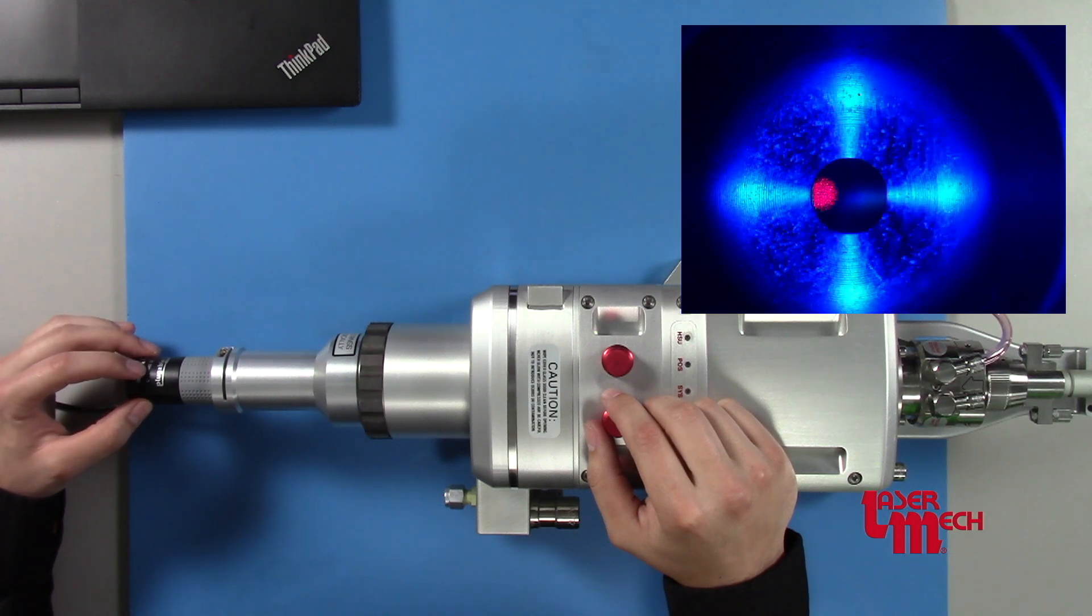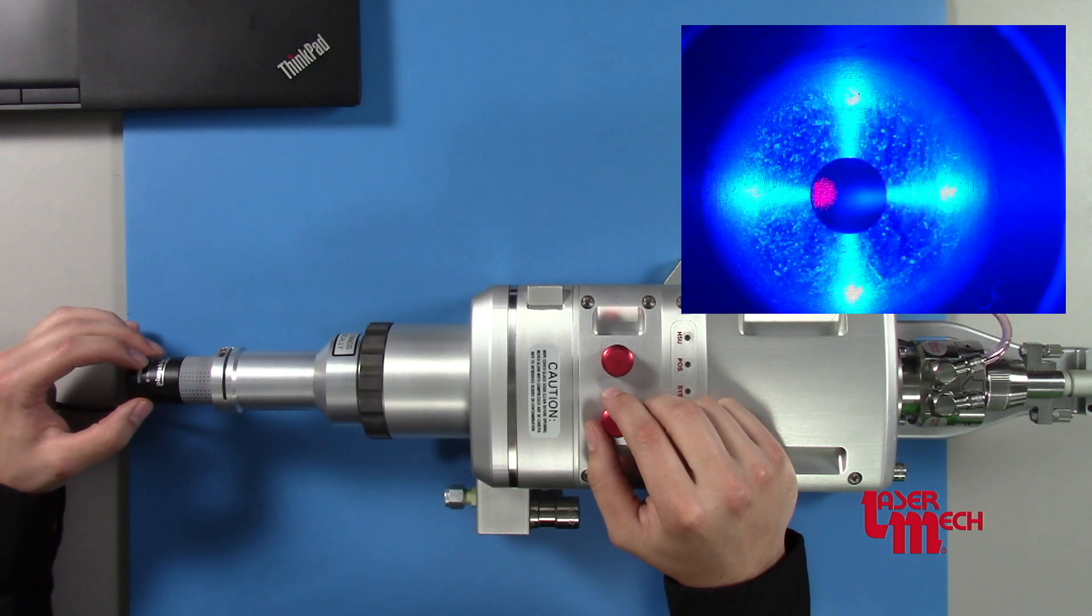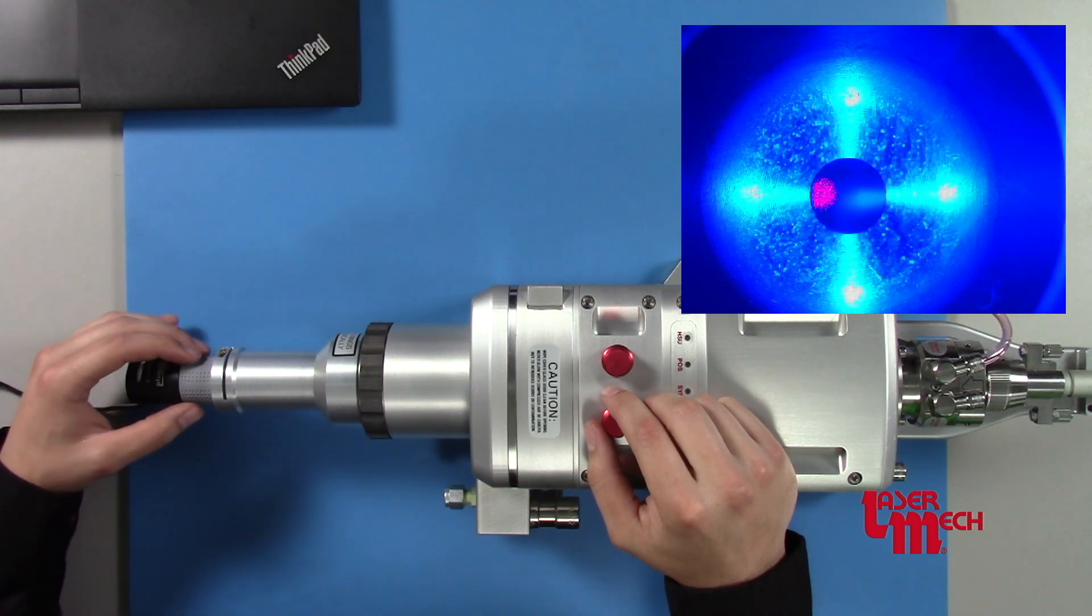You can also adjust the light here if you need to. Sometimes your beam may be dimmer or brighter, so adjust it so you can see the beam the best.